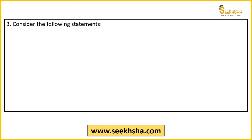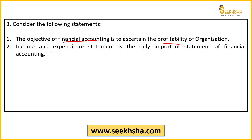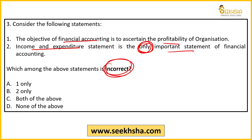Third question पर आ जाओ — again बड़ा अच्छा question है। Financial accounting से related — दो statements given हैं। पहली statement कहती है कि financial accounting का objective है profitability देखनी है organization की। दूसरा statement कहता है कि financial accounting के अंदर एक ही important statement है — only income and expenditure statement। आपको बताना है कौन सा statement incorrect है। Options: A) one only, B) two only, C) both, D) none।